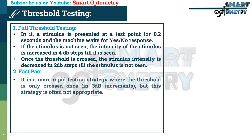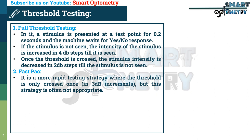Fast pack is a more rapid testing strategy where the threshold is only crossed once in 3 decibel increments. However, this strategy is often not appropriate.